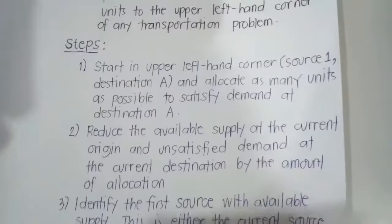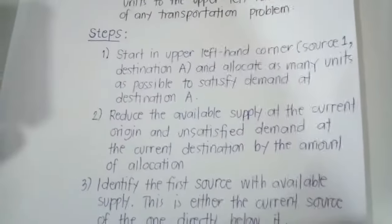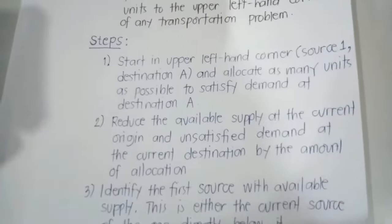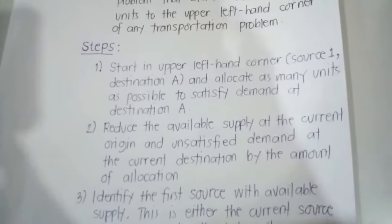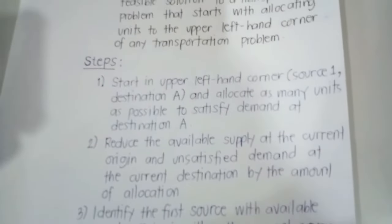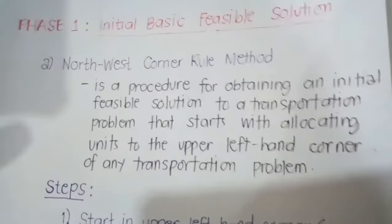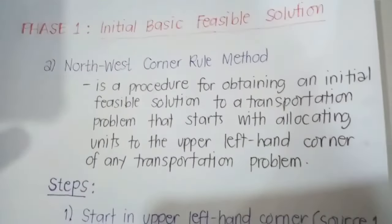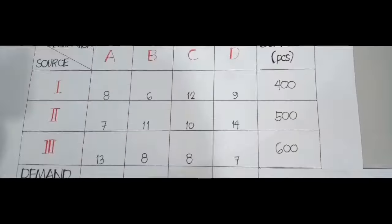Step four: identify the first destination with unsatisfied demand — either the current destination or the one immediately to the right of it. Step five: allocate as many items as possible to the route associated with the origin-destination combination identified in steps three and four. Step six: return to step two. We will now apply this method with a practical example using the Northwest Corner Rule Method.